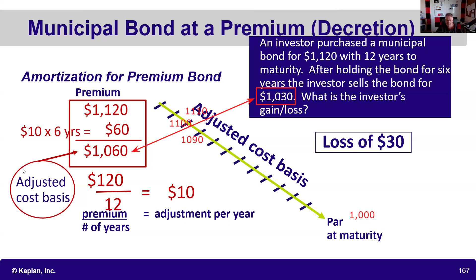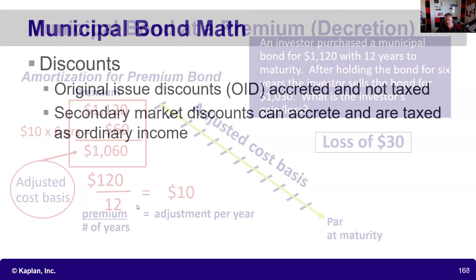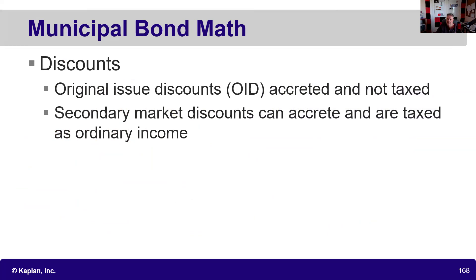Now for the other version: when we do an OID — original issue discount — or a zero-coupon bond, it is very testable to know that we're going to do straight-line amortization upward, which is called accretion. Since this is a municipal issuer, the imputed interest is not taxable — there is no phantom income like there would be with a corporate OID, corporate zero, treasury strip, or treasury receipt.